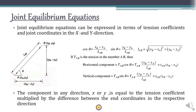The length of member AB is L_ab, and it is set at an angle theta with the horizontal. The x-component of this force is T_ab times cos theta, and the vertical component is T_ab times sin theta, where T_ab is the tension in the member.